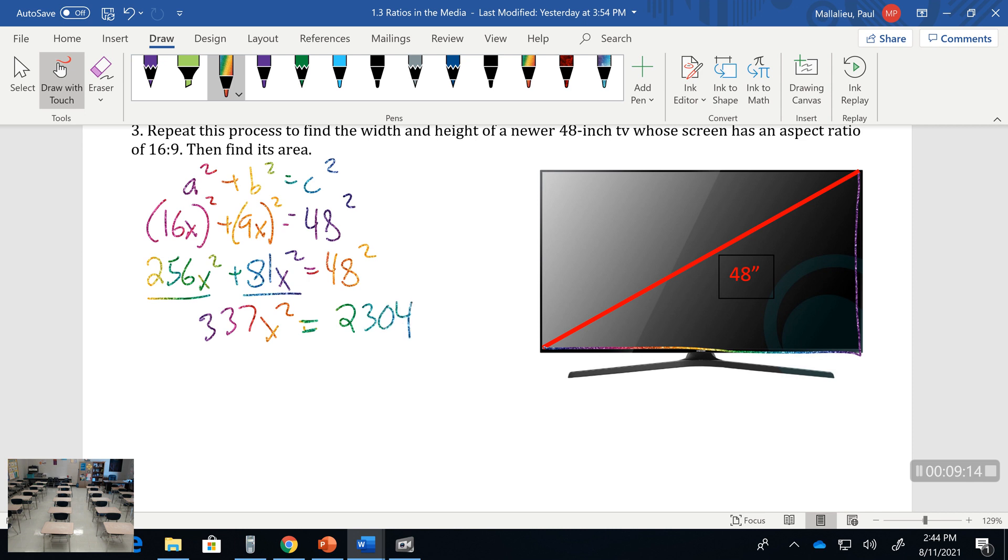Divide by 337, so x² equals 6.84. Take the square root of that, so x equals 2.61.